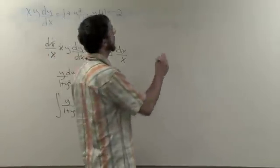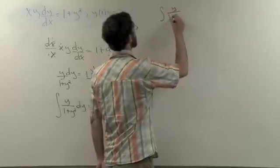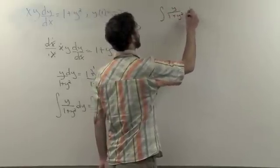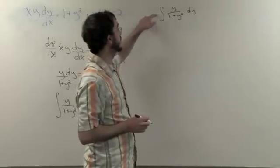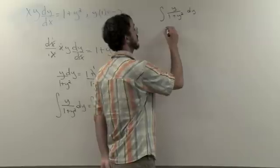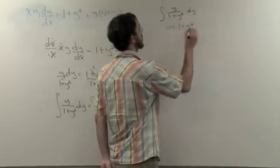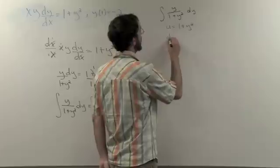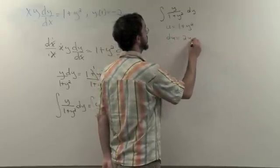Let's take a look at integrating y over 1 plus y squared, dy. It would be helpful for us to integrate this by using u substitution. So, we'll let u equal 1 plus y squared, differentiating with respect to y, we get du is equal to 2y dy.